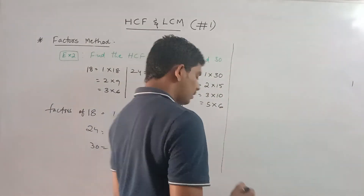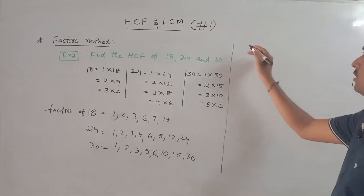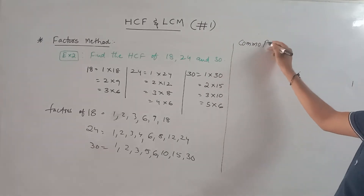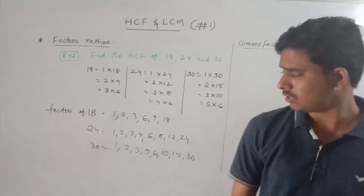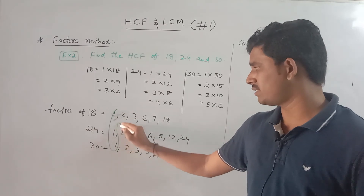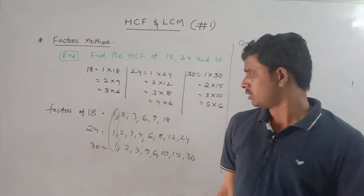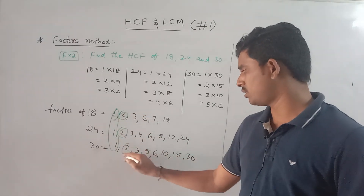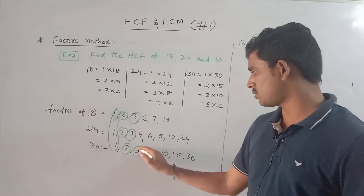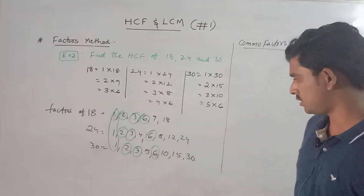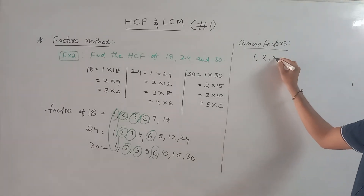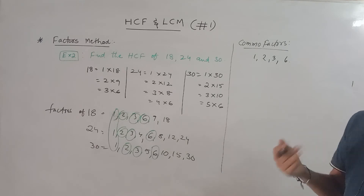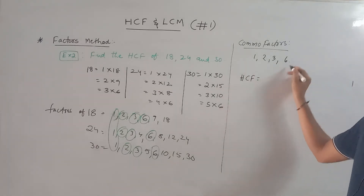Step 2: pick out the common factors. What are the common factors? 1 is common because 1 is a factor of every number. 2 is also common. 3 is also common. 6 is also common. There are no common factors above 6, so the common factors are 1, 2, 3, and 6.